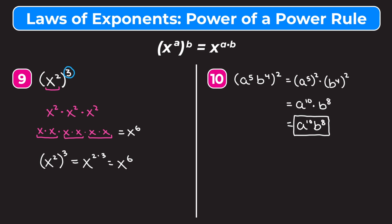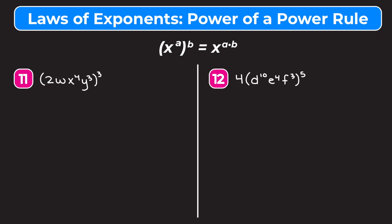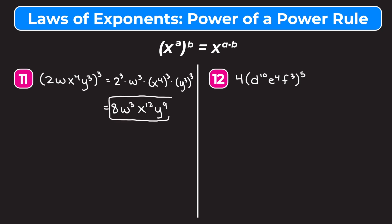Example eleven is 2w, x to the fourth, y to the third, all raised to the third power. I'll rewrite it as 2 to the third times w to the third times x to the fourth to the third times y to the third raised to the third. Two to the third is 8. w to the third stays as w to the third. x to the fourth raised to the third: four times three is twelve, so x to the twelfth. y to the third raised to the third: three times three is nine, so y to the ninth. Our answer is 8w to the third, x to the twelfth, y to the ninth.